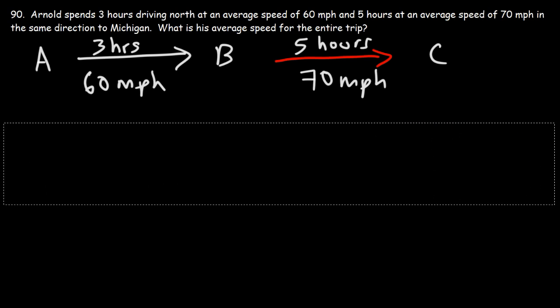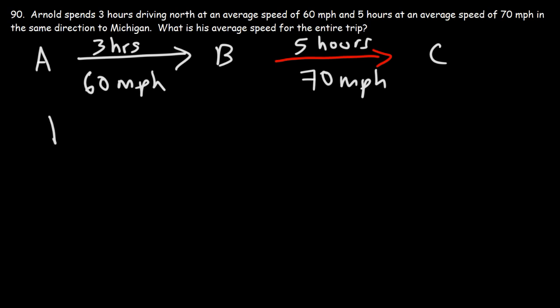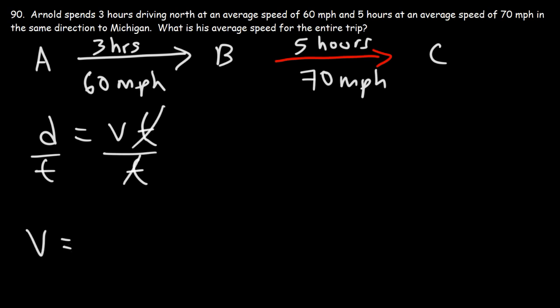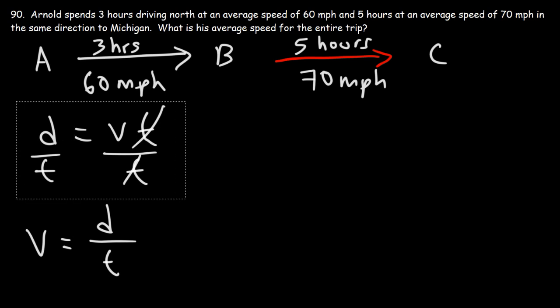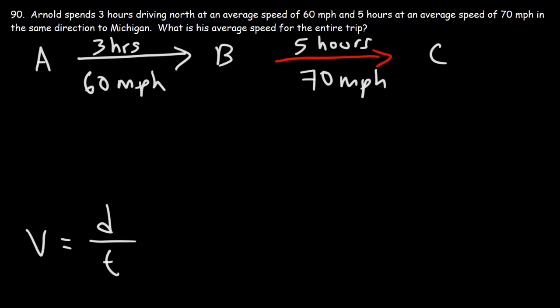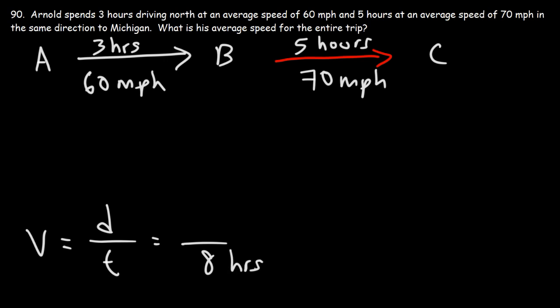But how can we calculate the average speed for the entire trip? Going back to the equation: distance equals rate multiplied by time. We need to solve for V — dividing both sides by T, the average speed V equals the total distance divided by the total time. The total time is 8 hours — that's 3 plus 5. But we don't know the total distance yet. We can calculate the distance for each segment using D equals RT.